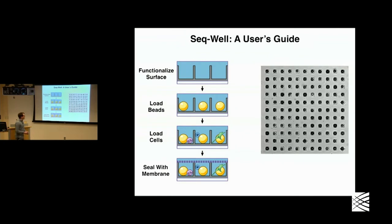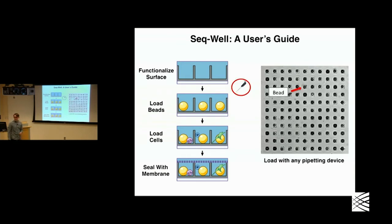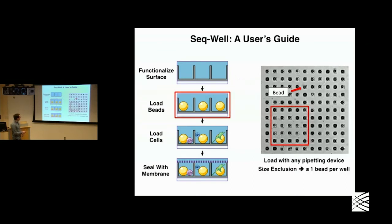What this looks like is a micro-well device that we functionalized. The device has 86,000 wells — 45 microns by 45 microns and 60 microns deep. The first thing we do is literally pipette the beads onto the device, as simply as using a ball pipette. Drop by drop we apply the beads and they fall in by gravity. Because the beads and wells are sized similarly, only one bead will fit in each well, and we're able to super load the device and achieve approximately 95% loading efficiency.